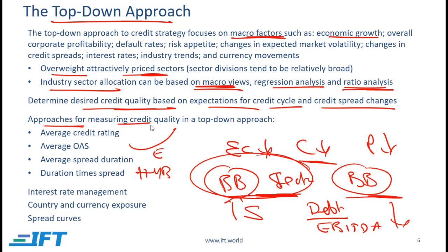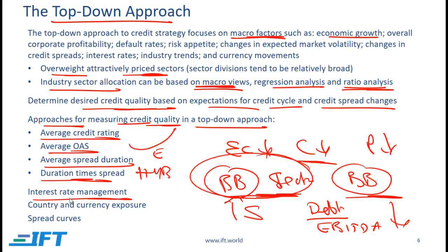There are various approaches for measuring credit quality in the top-down approach: average credit rating, average OAS, average spread duration, or duration times spread. Interest rate management is particularly important for investment grade bonds — if we expect interest rates to decrease, we might want to increase duration by buying longer-term bonds or using derivatives. We can also use options and mortgage-backed securities to take advantage of views on interest rate volatility.